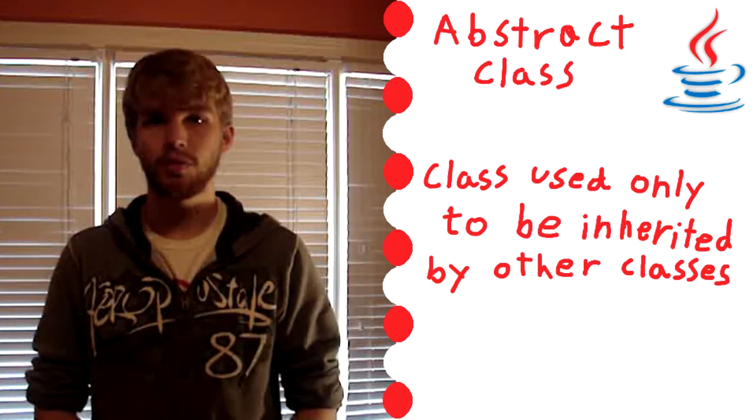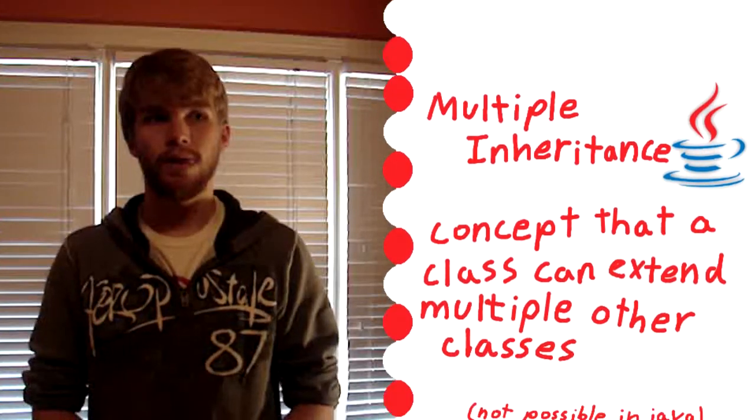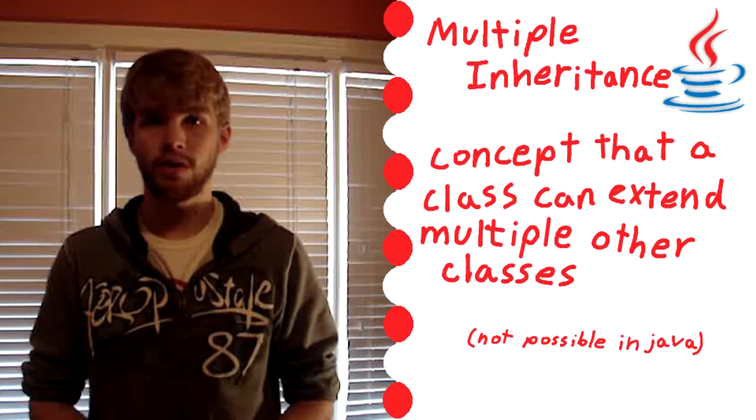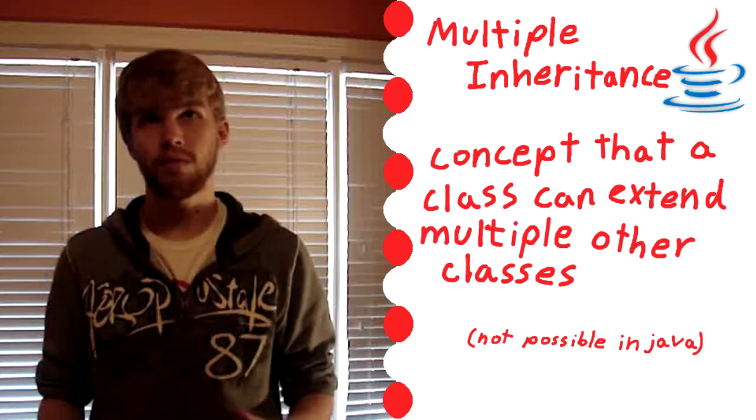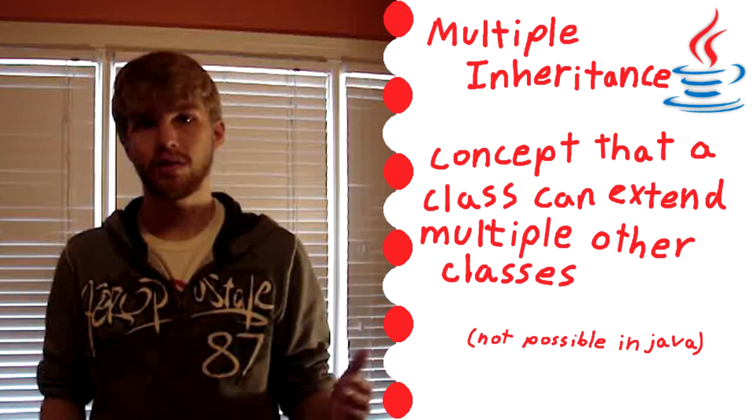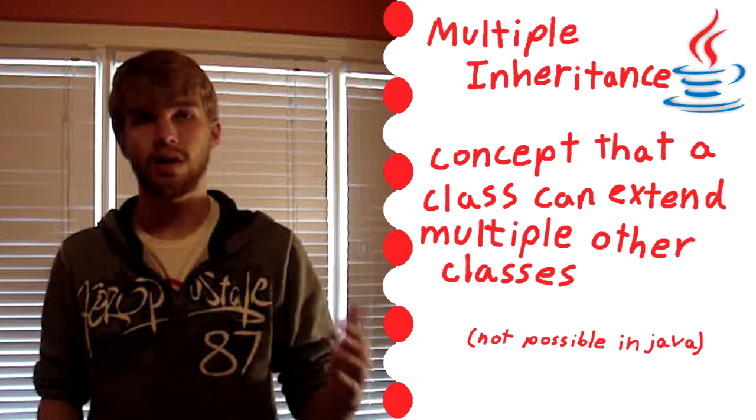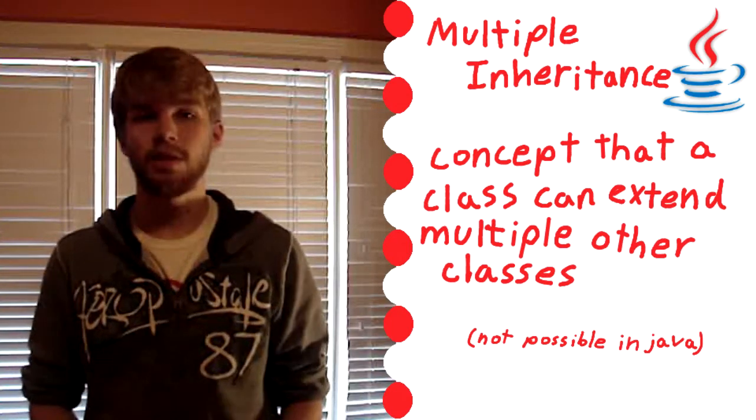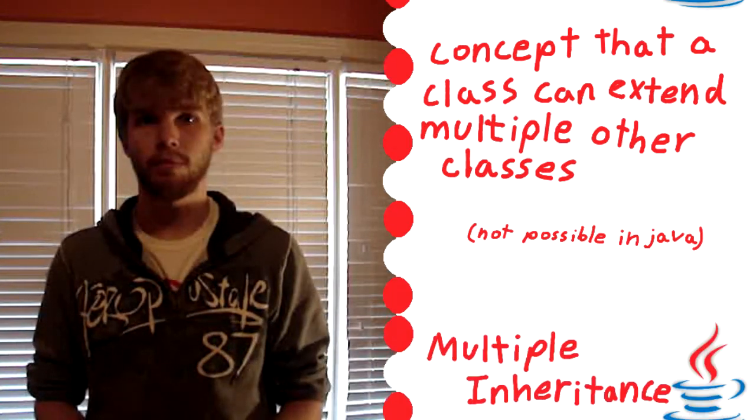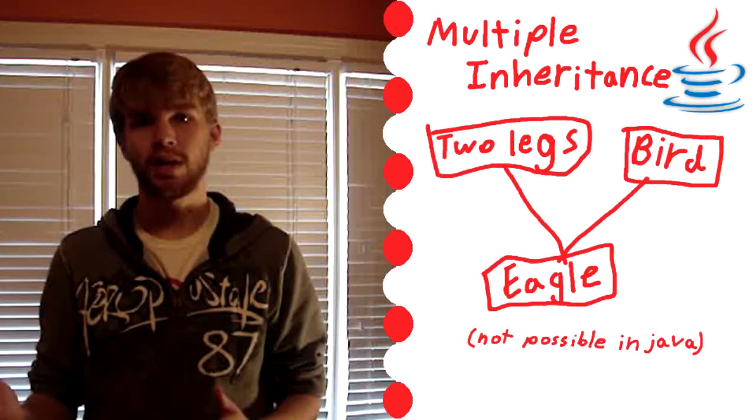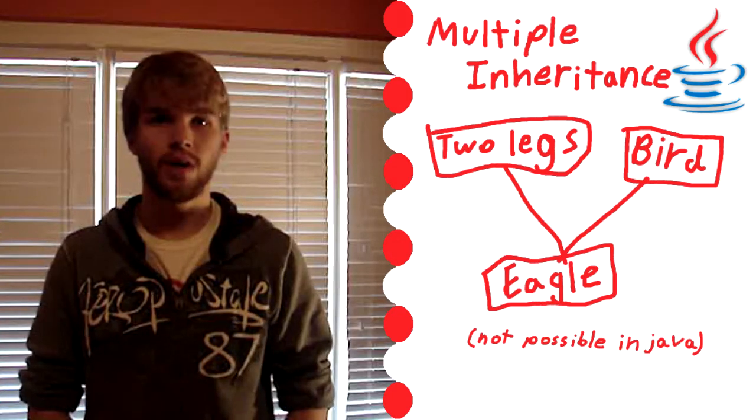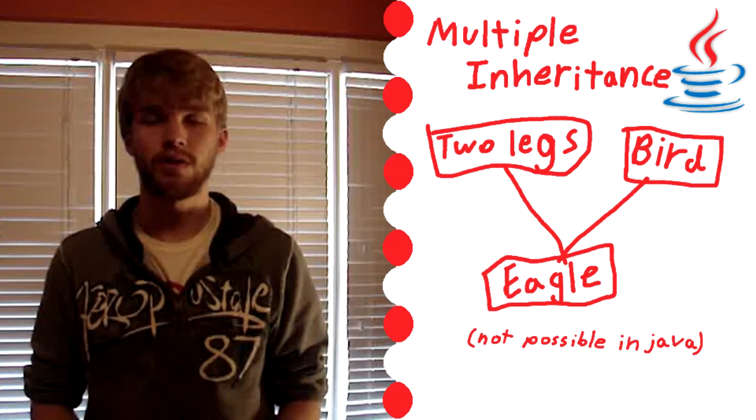And one of the things that a lot of people think is the weakness of Java is that it does not support multiple inheritance. So for instance, if you have an eagle, you can make it extend the bird class, which would make sense as part of the bird kingdom. But let's say you also want to extend the two-legged animal class. That you can't do in Java. That would be multiple inheritance, and you can't do multiple inheritance in Java.